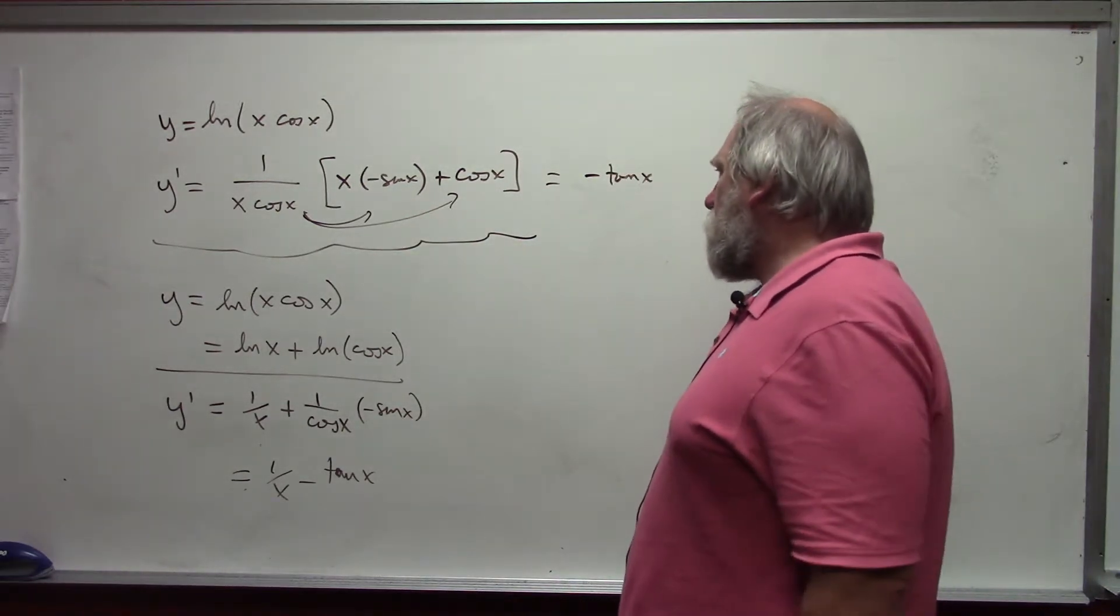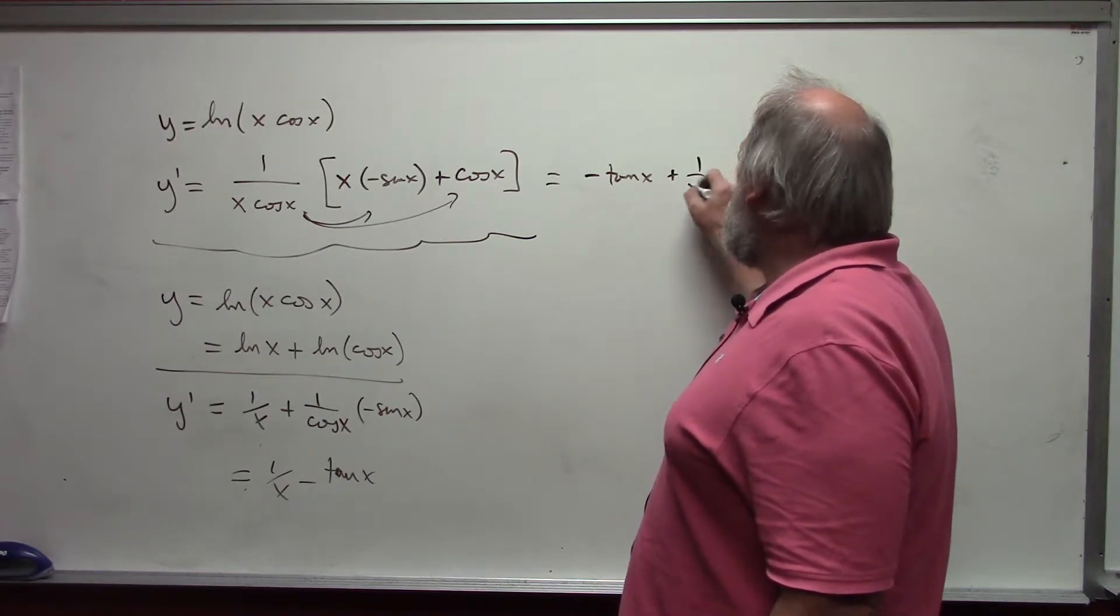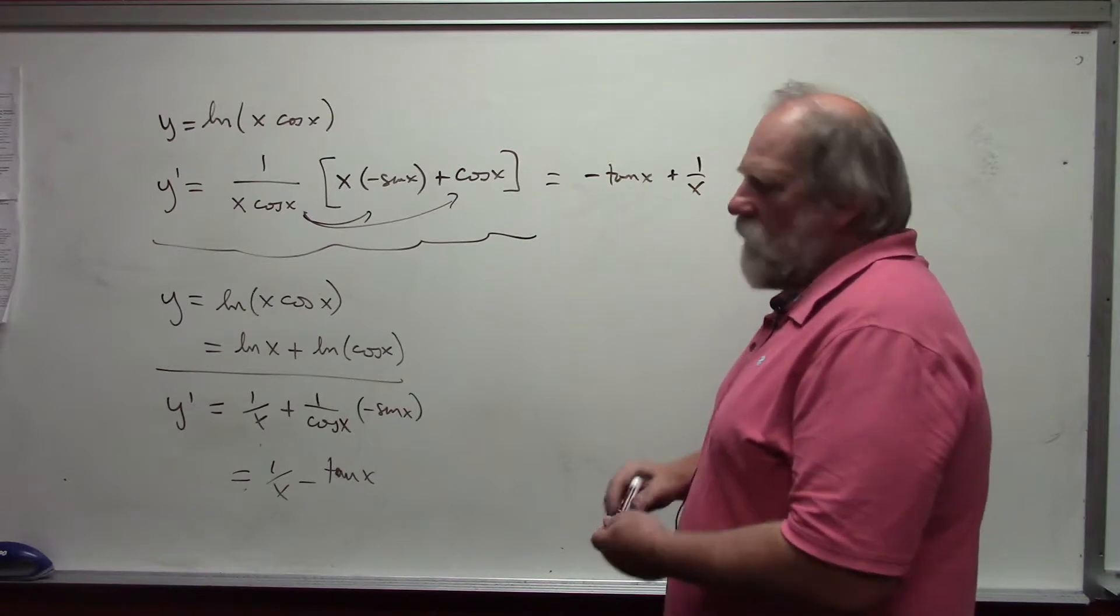And, this is when I distribute the other one, and this is when I distribute the other one, the cosine of x is reduced and I'm left with plus 1 over x. We get exactly the same thing. Either way.